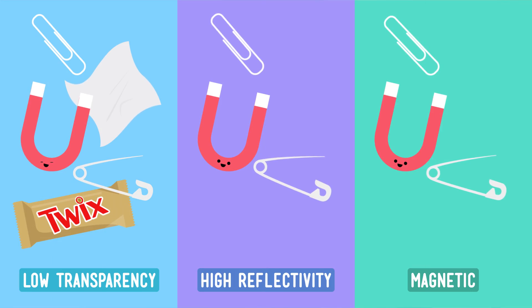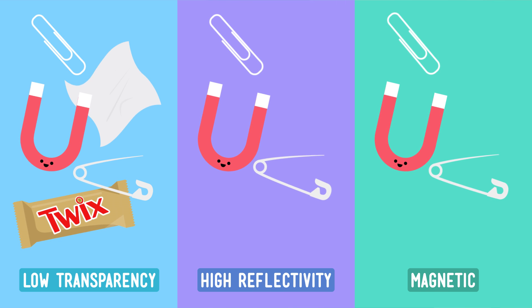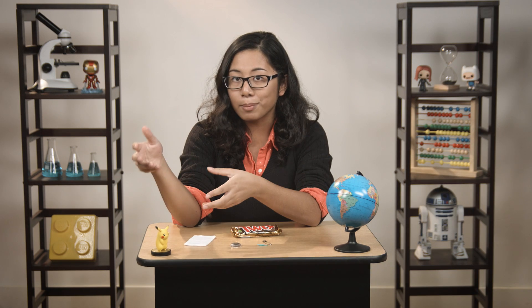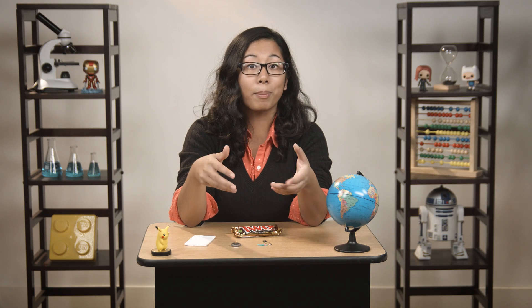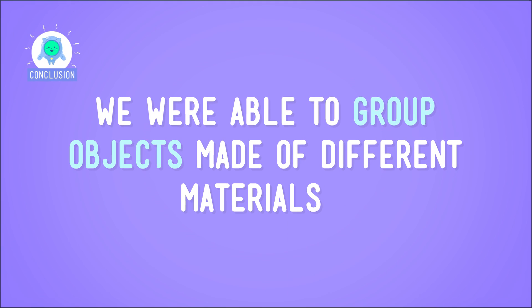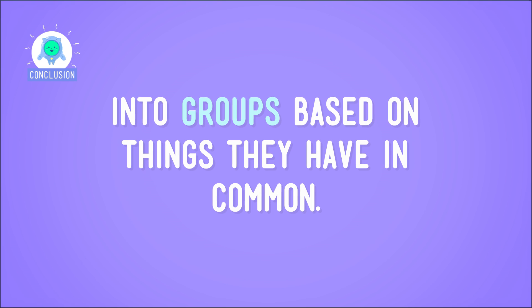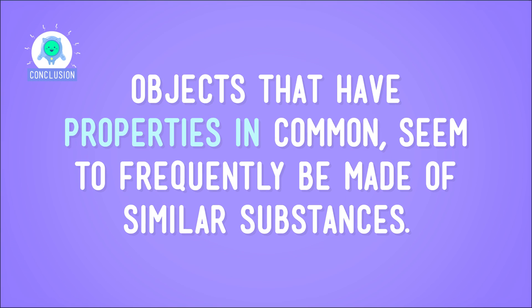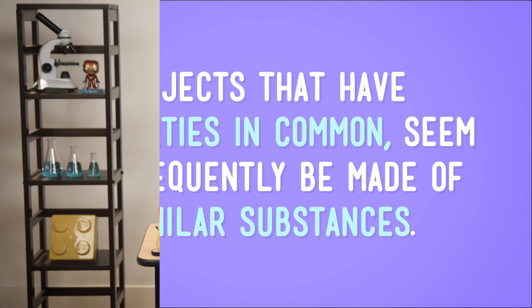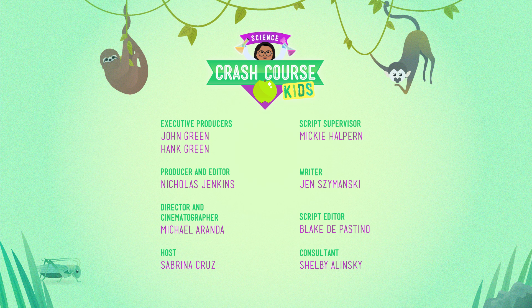So a substance is matter that is made of one kind of atom or molecule. Substances have specific properties, like reflectivity and magnetism. And once a substance can't be broken down into any other substance, it's called an element. And elements have properties too. We were able to group objects made of different materials into groups based on things that they have in common, specifically properties like transparency and reflectivity. We noticed that objects with similar properties often have other things in common too — like the objects attracted to the magnet were made of metal. So objects that have properties in common seem to frequently be made of similar substances. And speaking of groups that have things in common, I'm due to meet my peeps for a comic book movie marathon.